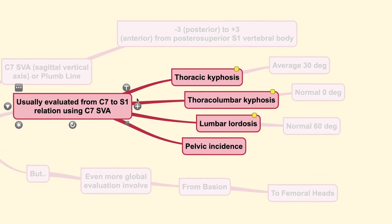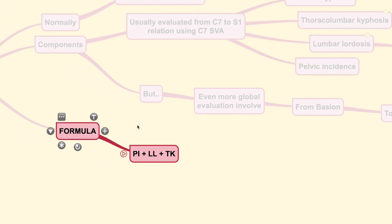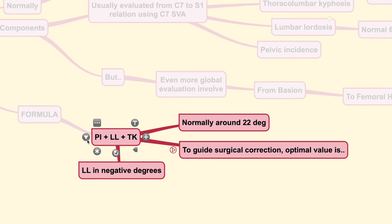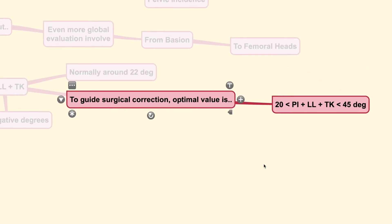Now, if you take into measurements all of these values, then you could obtain a formula that is being used to determine whether the patient is still in a good balance or not. The pelvic incidence and lumbar lordosis along with thoracic kyphosis is being added all together. And all the kyphotic curve is considered as positive values. And all the lordotic curves are considered as negative values. And if you add up all of these, you should obtain around 22 degree. To know this formula helps you guide surgical correction. Because the optimal value you want to achieve post-surgery should be at the range of 20 to 45 degree.